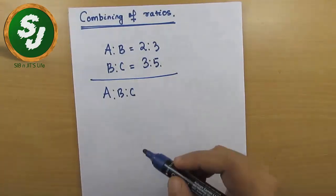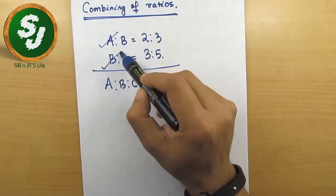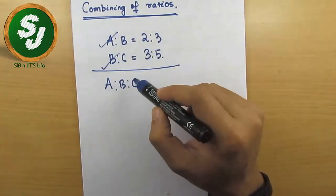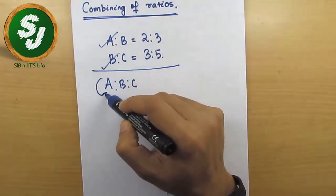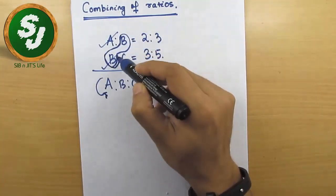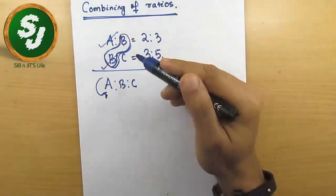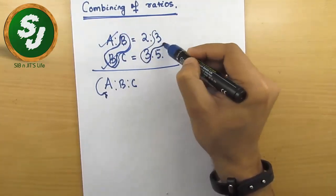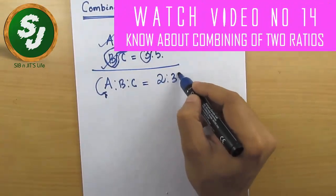These are two different ratios — a:b and b:c — and they need to be connected to form a:b:c. The b values need to be the same so they can be joined. In this case, both b values are the same, so we can directly write 2:3:5.